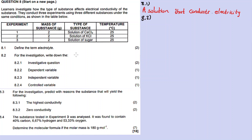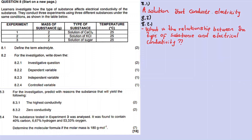Question 8.2.1 asks you to write down the investigative question. You go back to the statement and check what the learners are investigating. In this case, they are investigating the type of substance and how it affects electrical conductivity. So the investigative question is: What is the relationship between the type of substance and the electrical conductivity?